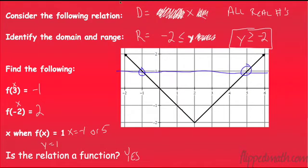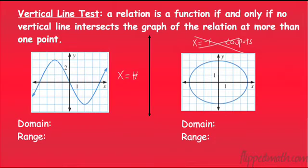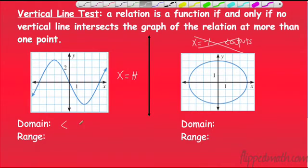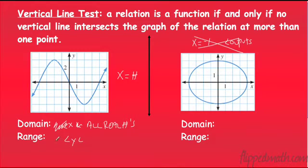Let's go back and find the domain and range for those other two graphs. My lowest x goes forever and ever left — so I cross that out. For my highest x, it also goes forever. That means all real numbers for the domain. How about my range? Does it ever stop going down? No — cross that out. Does it ever stop going up? That arrow would indicate no. So the range is also all real numbers.